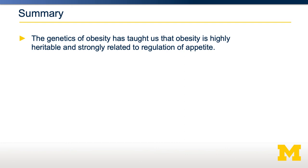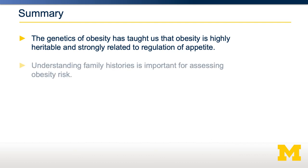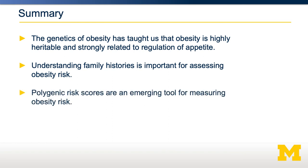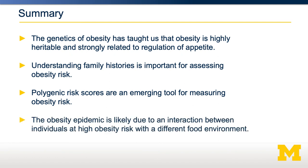In summary, studies of the genetics of obesity have told us not only that obesity is highly heritable, but that it is intimately connected to the negative regulation of appetite. Most obesity risk alleles are highly connected to appetite regulation. Polygenic risk scores are a useful tool for measuring obesity risk even in the absence of family history. The obesity epidemic is most likely due to how obesity risk alleles intersect with our food environment, resulting in higher levels of obesity.